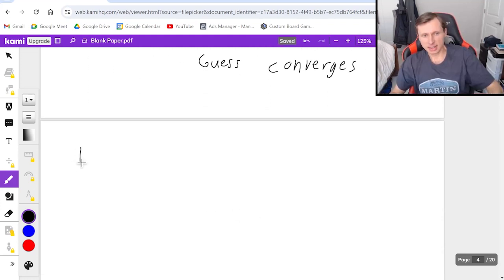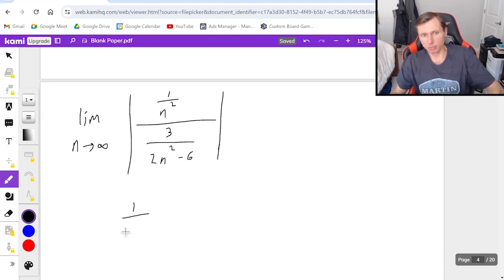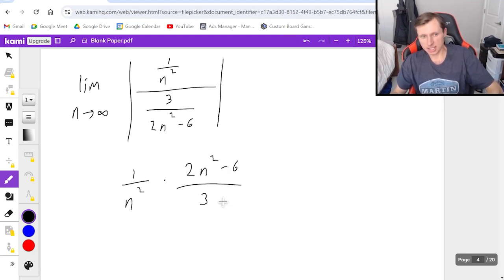So again, I'm going to do the same exact thing. Limit n goes to infinity. Fraction bar, absolute value, 1 over n squared, divided by 3 over 2n squared minus 6. Again, we have a complex fraction, so I am going to multiply this by the reciprocal, and it looks like this.